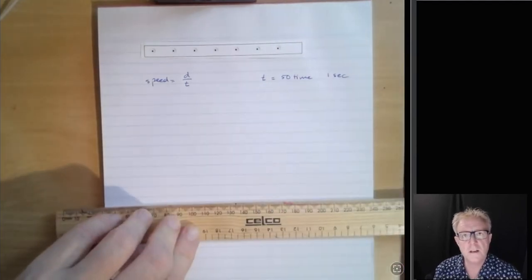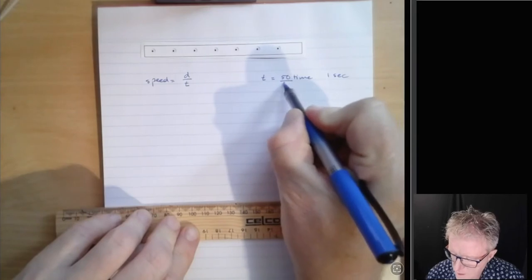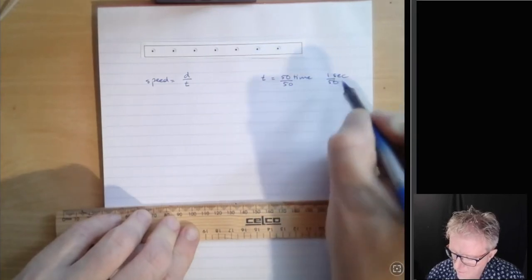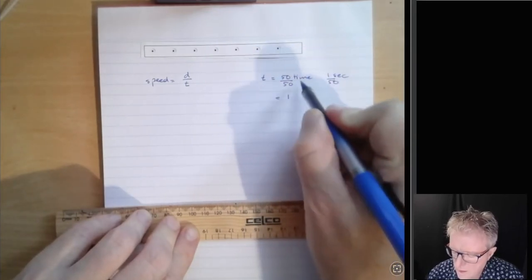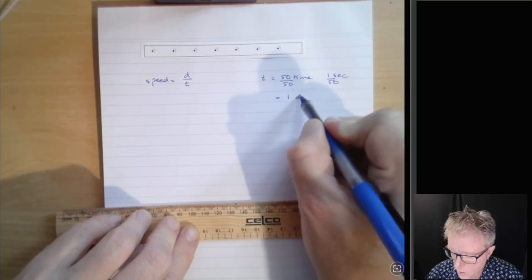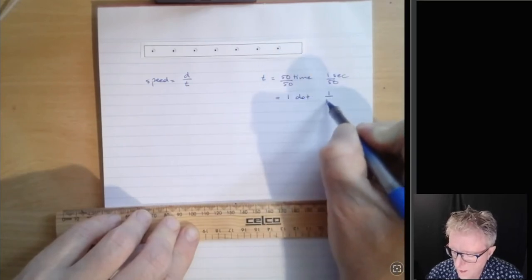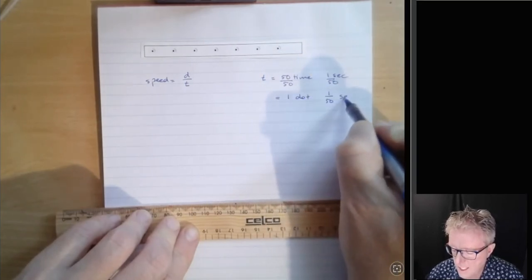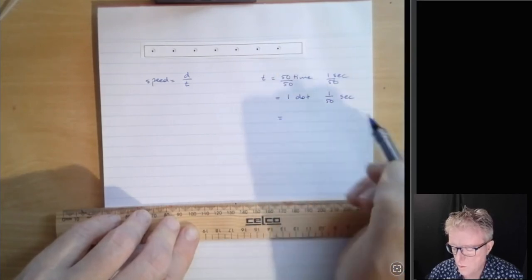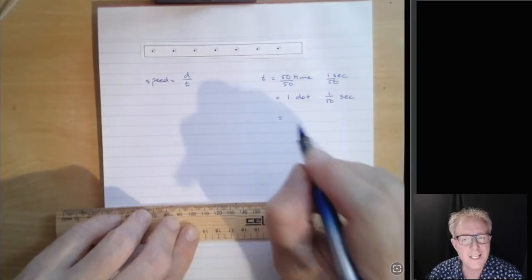So we want to find out the distance that occurs between each dot. So if we divide both sides by 50, then that's saying that one time that it hits the page, or one dot, occurs in one-fiftieth of a second. Now, when you do one divided by 50, you get 0.02.